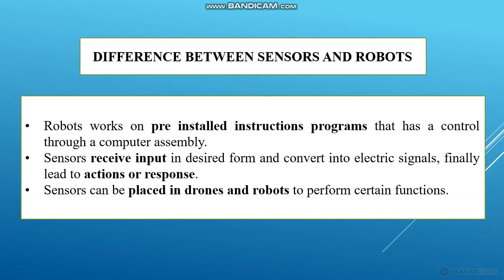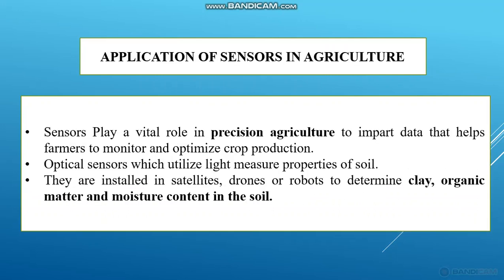Sensors are placed in drones and robots to perform certain functions. Sensors are small parts used to collect data. The sensors play a vital role in precision agriculture to provide data that helps farmers monitor and optimize crop production. With the help of this data, a farmer can monitor the field and optimize crop production.